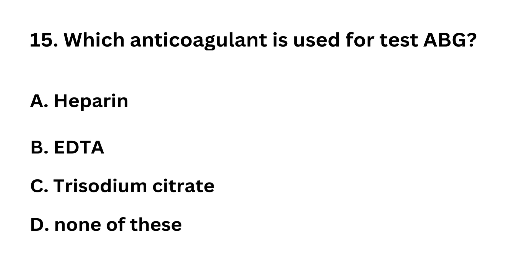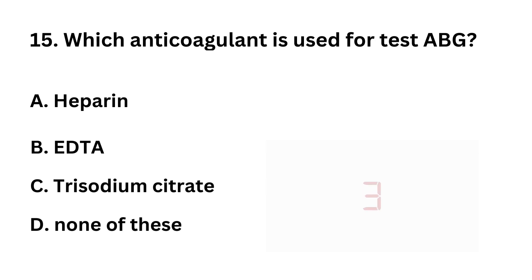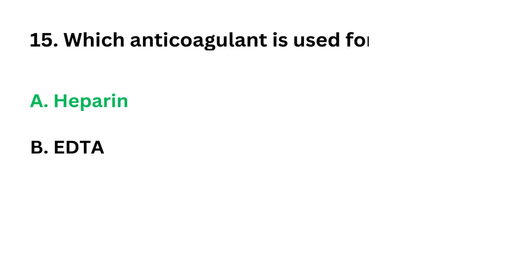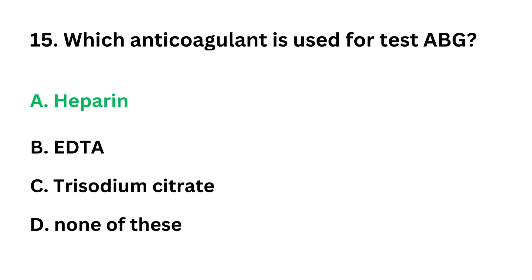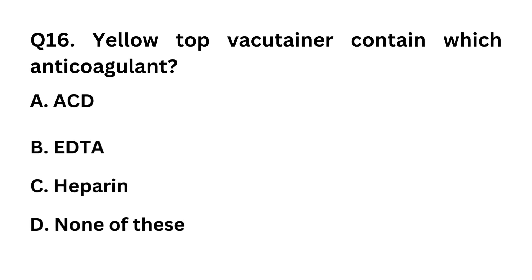Question 15: Which anticoagulant is used for ABG (arterial blood gas) test? Option A: Heparin. Option B: EDTA. Option C: Trisodium citrate. Option D: None of these. The correct answer is Option A: Heparin.